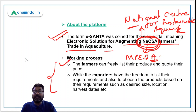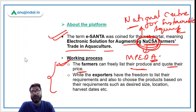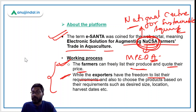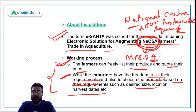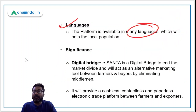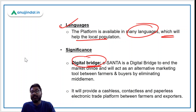The working process of the e-SANTA platform: farmers will list their produce and quote their price on this platform. Exporters will have the freedom to list their requirements and choose products based on their requirements such as size, location, and harvest dates. The platform will be available in many languages to help the local population and will act as a digital bridge between farmers and exporters.